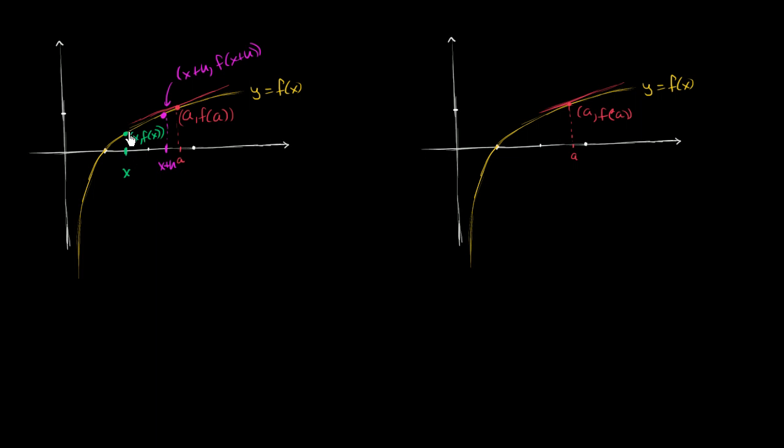We can find the slope of the secant line that goes between these two points. That would be your change in the vertical, which would be f of x plus h minus f of x, over the change in the horizontal, which would be x plus h minus x. And these two x's cancel.